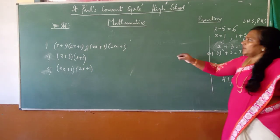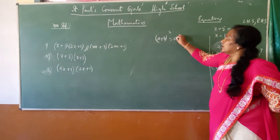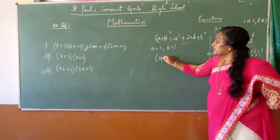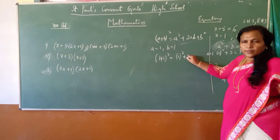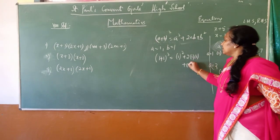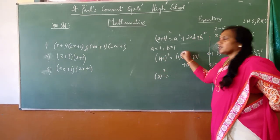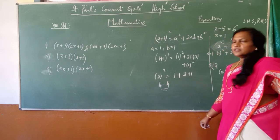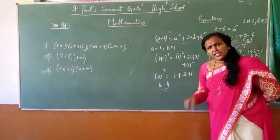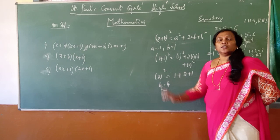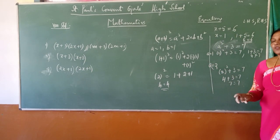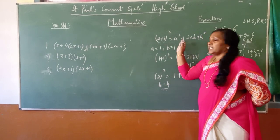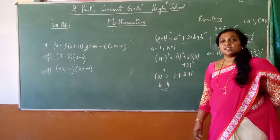Now I will take one more equation with a and b. Let me give the values a = 1 and b = 1. Substituting, 1 plus 1 means 2. On the other side, 1 plus 1 means 1 into 1, which is 1, giving 2. You give any values for a and b, and LHS will always be equal to RHS. In the earlier equations, LHS was equal to RHS only for a particular value. But in this equation, for any values of a and b, LHS becomes equal to RHS.